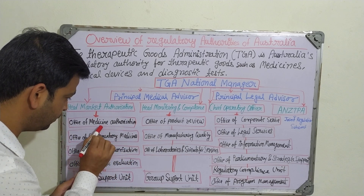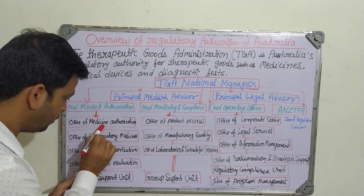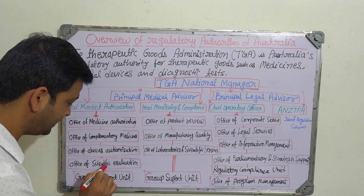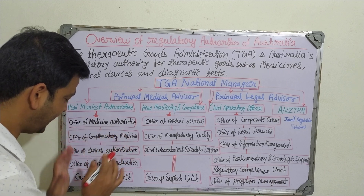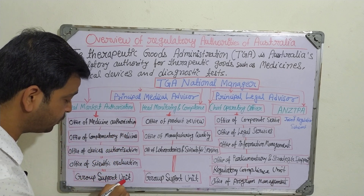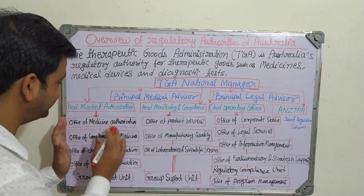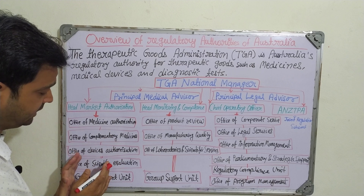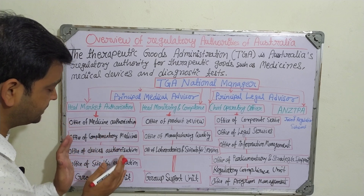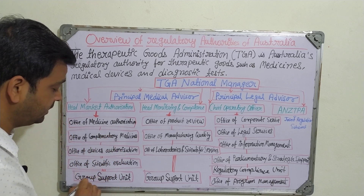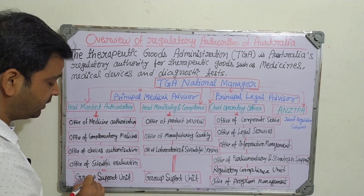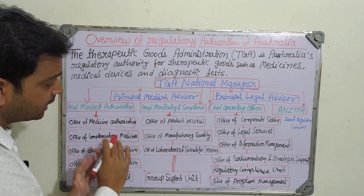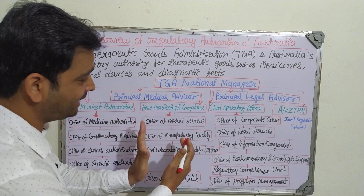These three offices — medicine, complementary medicine, and devices — are all supported by the Office of Scientific Evaluation, as shown by the connecting lines in the diagram. The entire market authorization function is further supported by a Group Support Unit.